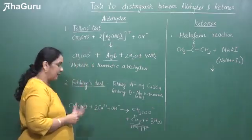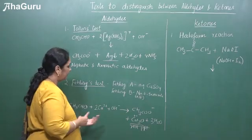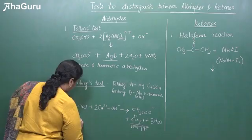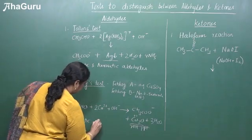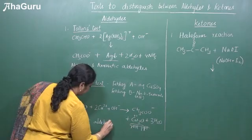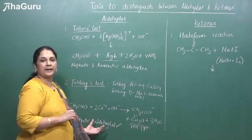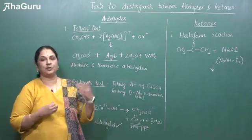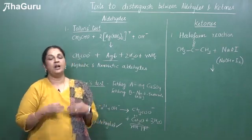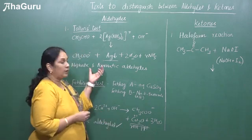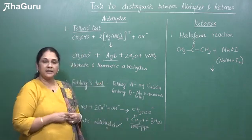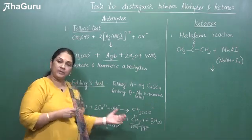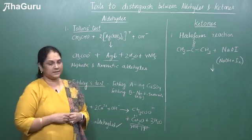Since Fehling's solution is a mild oxidizing agent, the aldehyde will get oxidized to acid, but this test will be answered only by aliphatic aldehydes — aromatic aldehydes will not respond. If the exam asks you to distinguish between an aromatic and aliphatic aldehyde, you can use Fehling's test because it answers only for aliphatic and not aromatic. If you want to prove it's an aromatic aldehyde, go for Tollen's test.